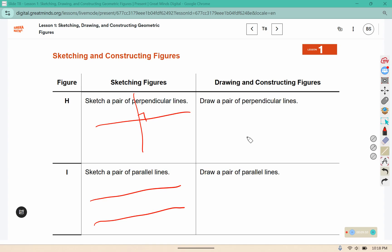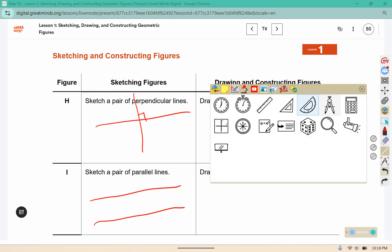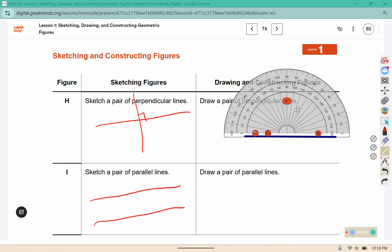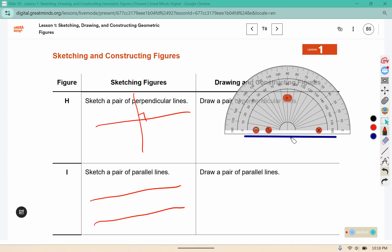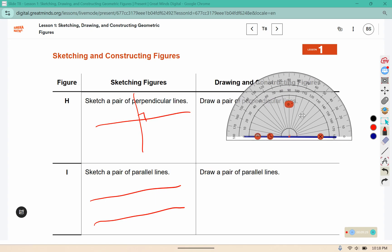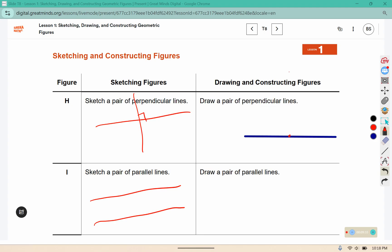So we'll start here, we're going to use our straight edge to draw a straight line, and our protractor to put a mark at 90 degrees.